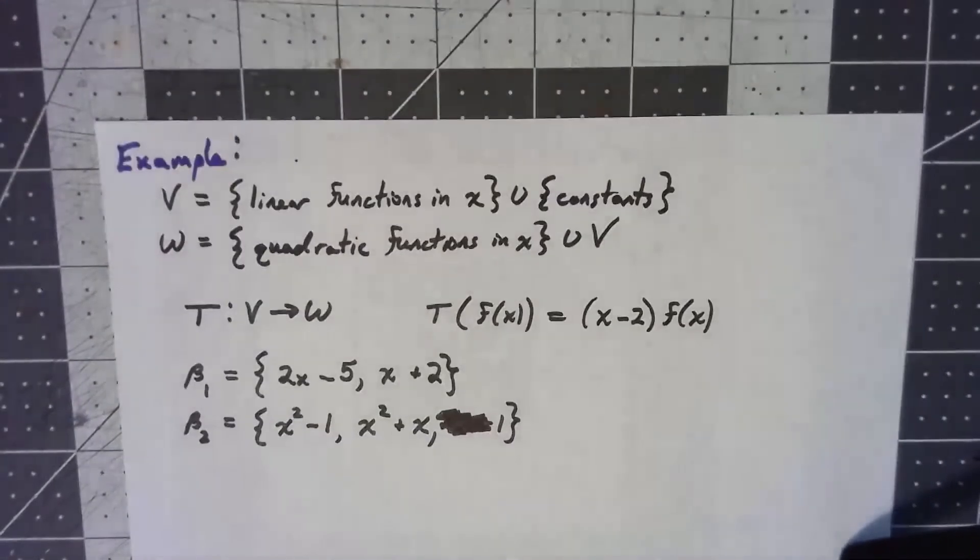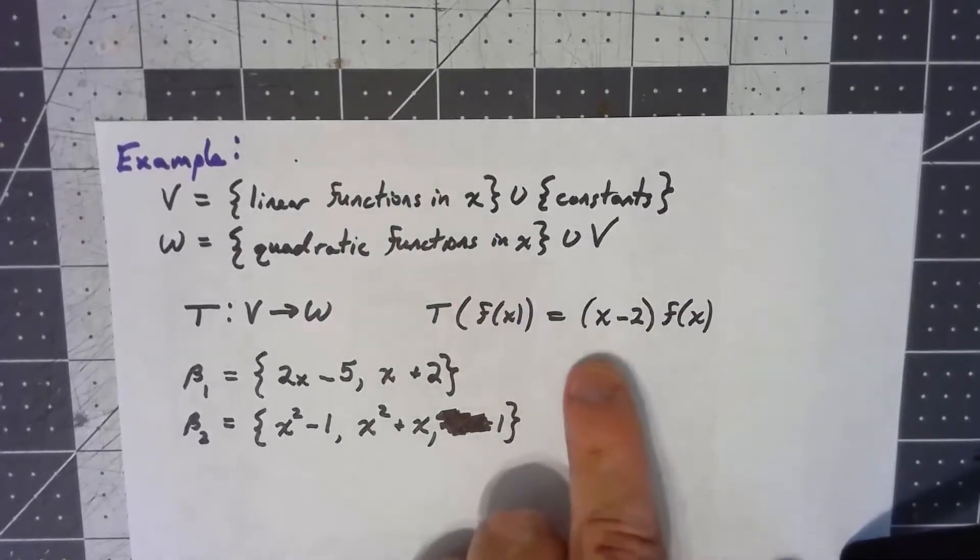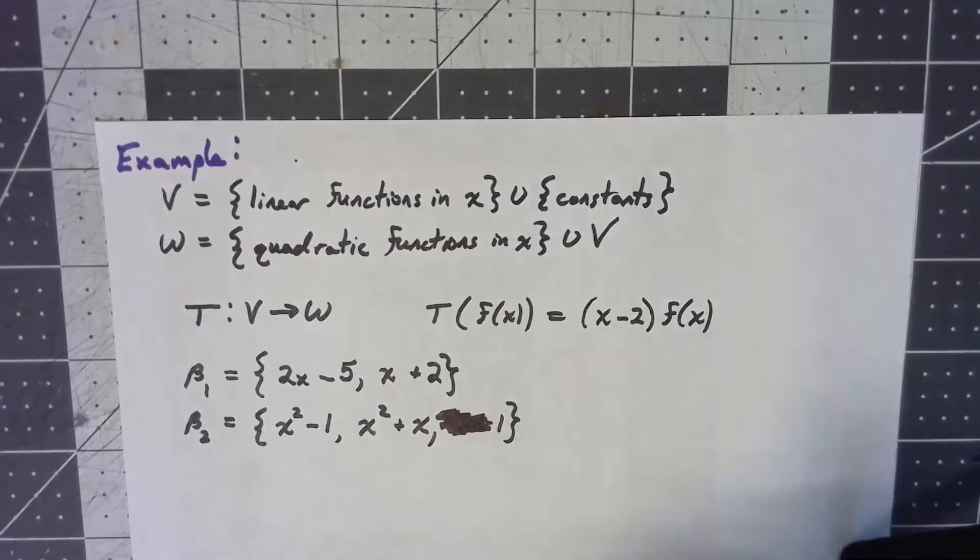Certainly there will be things in W that aren't in the range of this function. That's perfectly fine. This still maps things that are degree one or less to things that are degree two or less. You should verify that this is actually a linear transformation, but it is.